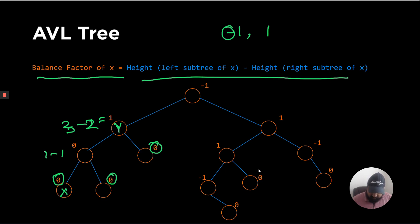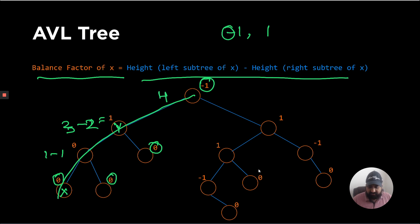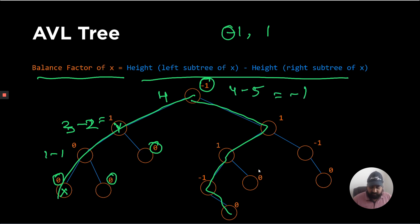For the root node, the height of the left subtree is 4 using the one-based approach, and on the right there are 5 nodes — that's the longest path. So the balance factor will be 4 minus 5, which equals -1. This is a perfectly valid AVL tree because all nodes have balance factors of 0, 1, or -1.